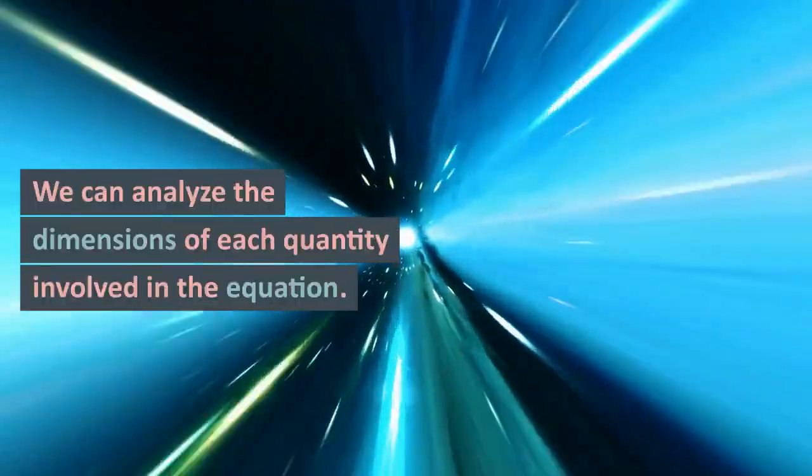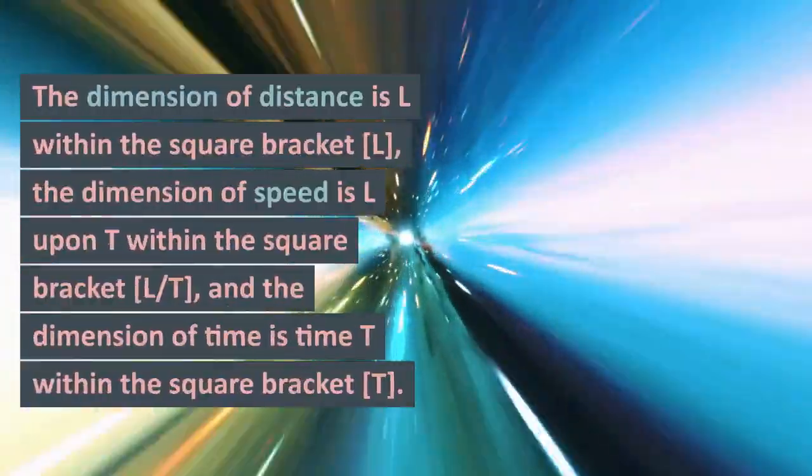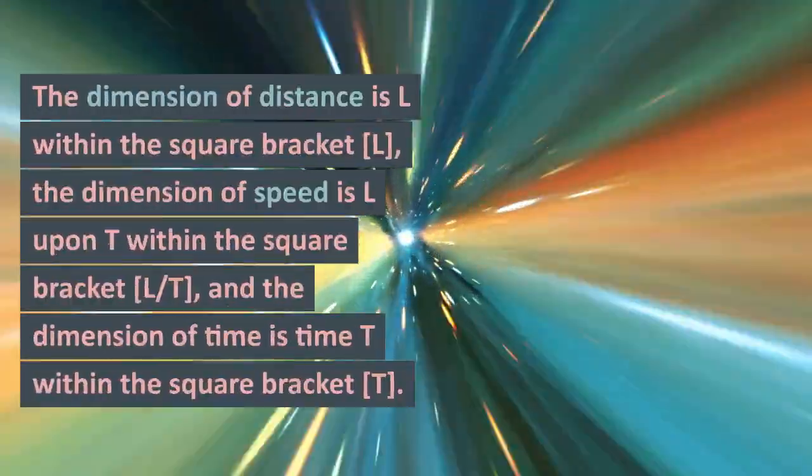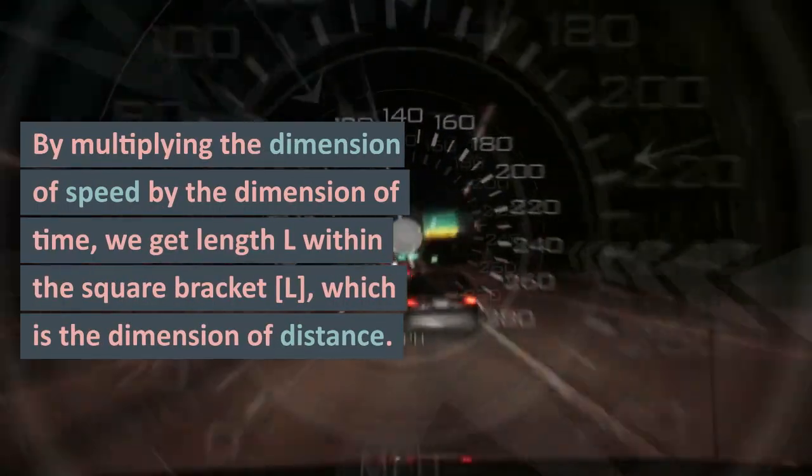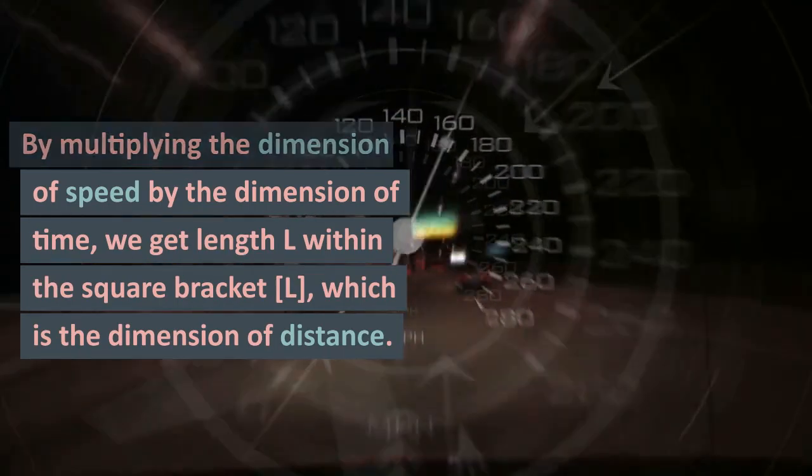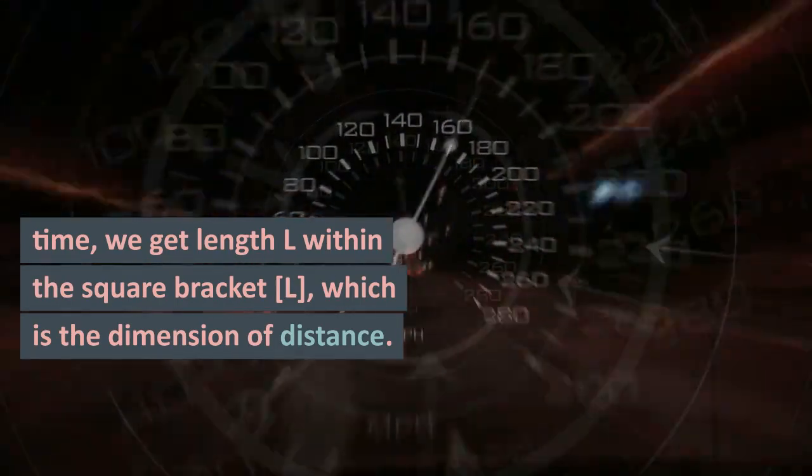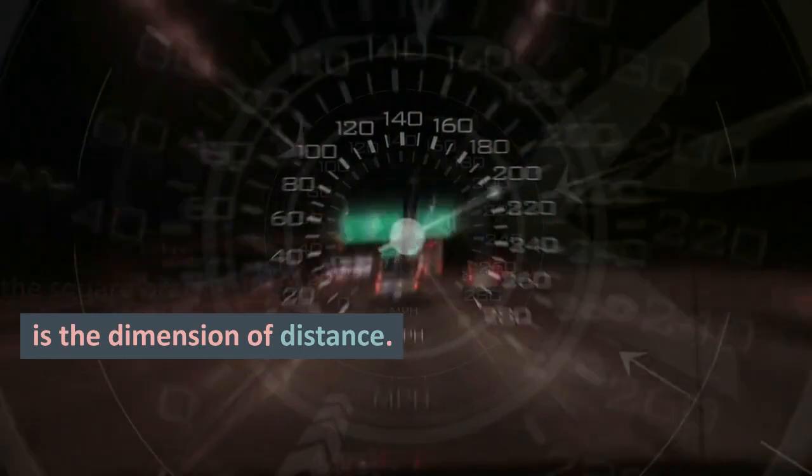The dimension of distance is [L]. The dimension of speed is [L/T], and the dimension of time is [T]. By multiplying the dimension of speed by the dimension of time, we get [L], which is the dimension of distance. Therefore, the equation is dimensionally consistent.